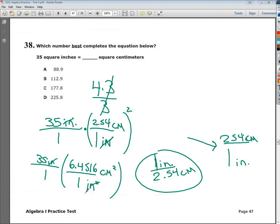What I have to do now is just do the multiplication, so I do 6.4516 times 35, and I end up somewhere in the general vicinity of 225.8 centimeters squared. So when you have this, which is D in case you didn't notice,